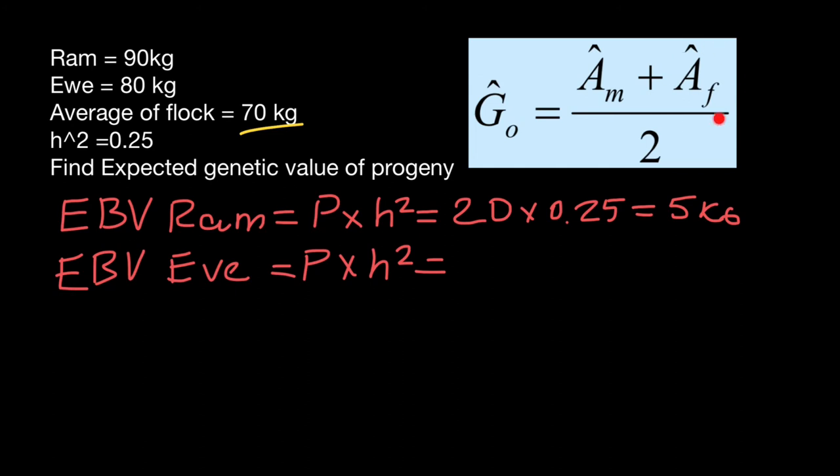estimated breeding value of the female would be deviation from the mean of the population, which is 70 kilograms. So 80 kilograms minus 70 would be 10 kilograms. So 10 kilograms for female, again,